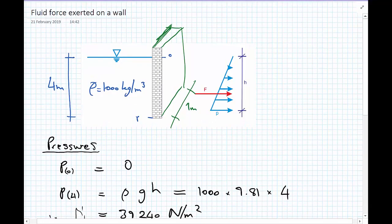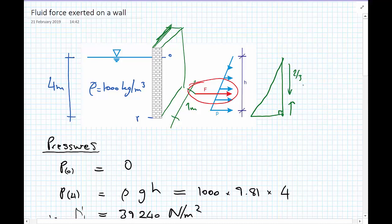So going back to our original problem, we now know this value F, but we don't know yet where F is acting. But if we remind ourselves what we know about centroids, we know that the centroid of a triangle is 1 third up from the right angle, or 2 thirds down away from the other corners.